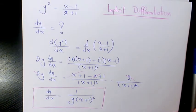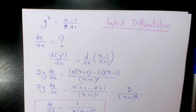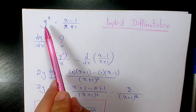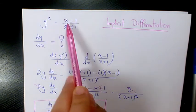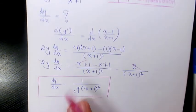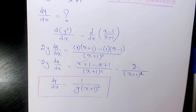That's the final answer. We could also use explicit differentiation and have y equals square root of x minus 1 over x plus 1. You can try it yourself to see if you get exactly the same answer.